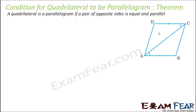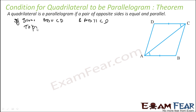One condition is that if a pair of opposite sides is equal and parallel, then that particular quadrilateral is a parallelogram. For example, if AB is equal to CD and AB is parallel to CD, we have to prove ABCD is a parallelogram. So in the next question, if you have a quadrilateral where a pair of opposite sides are parallel and equal, you can directly say it is a parallelogram, because this is the theorem we are going to prove.